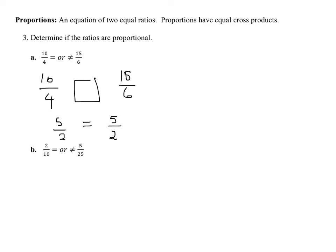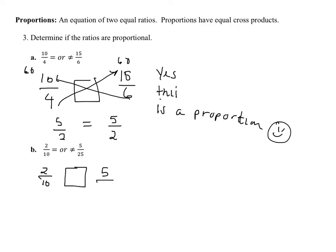We can write them as equivalent fractions, or we can cross multiply: 6 times 10 is 60, 4 times 15 is 60. So I know this is a proportion. What about this one? 2 tenths, 5 over 25. If I want to be lazy, I can just cross multiply: 50, 50. Or I could reduce. 2 tenths reduces to 1 fifth, and so does 5 over 25. So a couple of ways to do it. The other way is to get a common denominator between the two fractions and then rewrite.